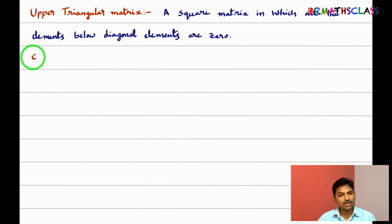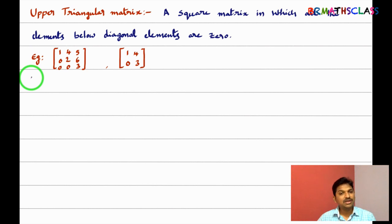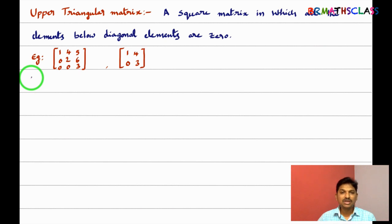For example, see this — with this example you can understand easily. What are the diagonal elements in this matrix? It is a square matrix. The diagonal elements are one, two, three. You observe that all the elements below the diagonal are zero. So in a square matrix, if all the elements below the diagonal are zero, then we say that it is an upper triangular matrix. If we draw a line here, it forms like an upper triangle.